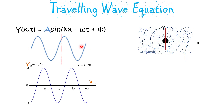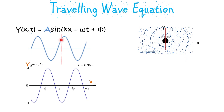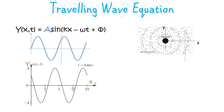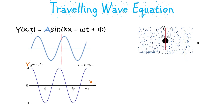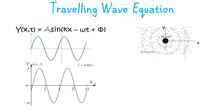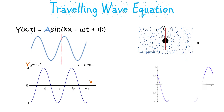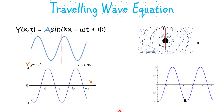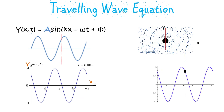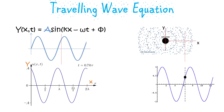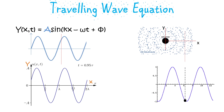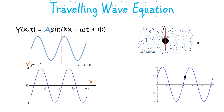We have seen how to find the value of y, or the position of a particle, for a given x when time equals zero. But as time progresses, the position of the particle changes. We have seen that the particle keeps oscillating about its mean position as time changes, and we will use this to find the position of the particle with respect to time at a given position x.